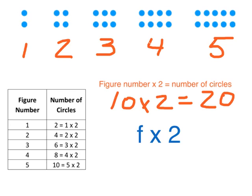So our expression is simply F times two. F stands for the figure number, and we multiply by two to get the number of circles. So let's try one more example. What if we had figure number 23? Actually, let's make it a little bit simpler. Let's make figure number 15. So 15 is the figure number, and we multiply that by 2. You probably know that 15 times 2 is 30.